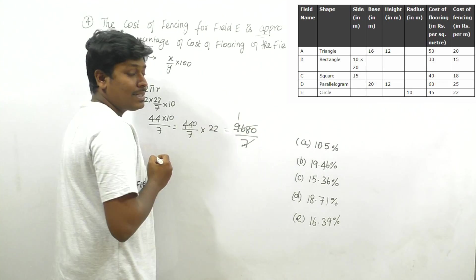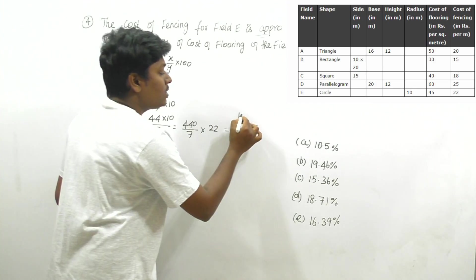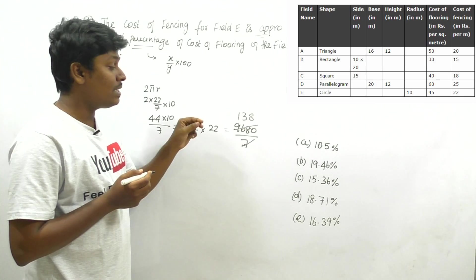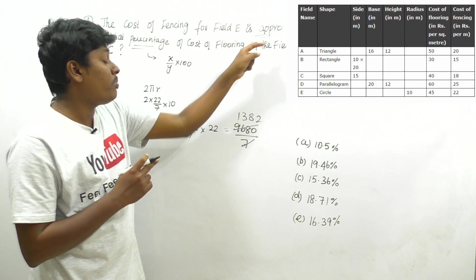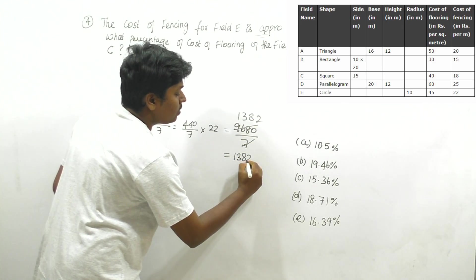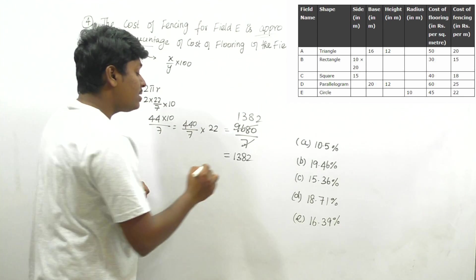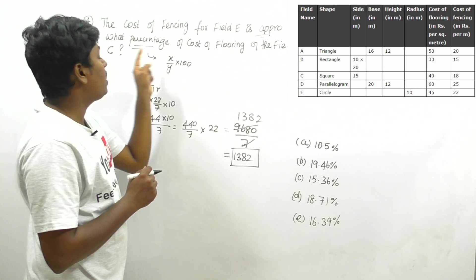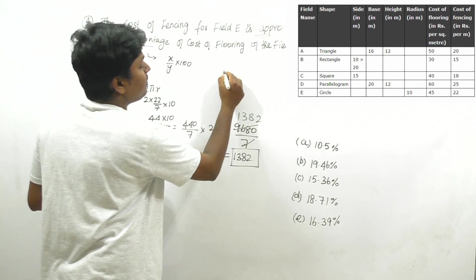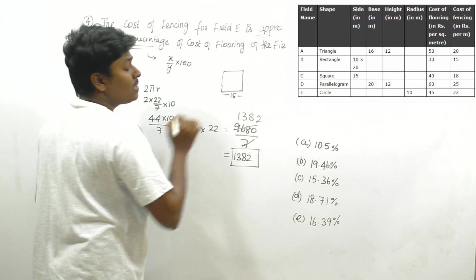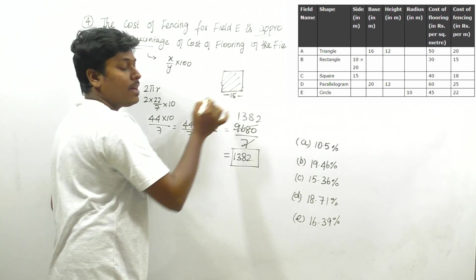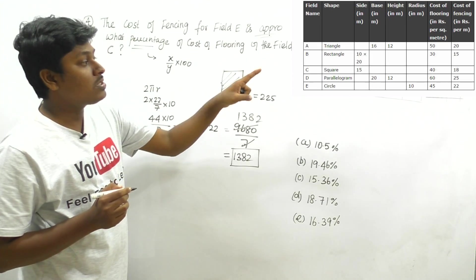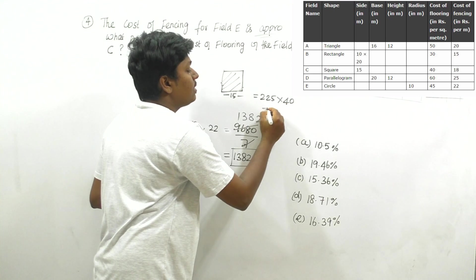Dividing 9680 by 7: 7 × 1 = 7, remainder 26; 7 × 3 = 21, remainder 58; 7 × 8 = 56, remainder 2; bringing down gives approximately 1382. Since this is an approximation, we stop here. Cost of fencing for field E ≈ 1382 rupees.